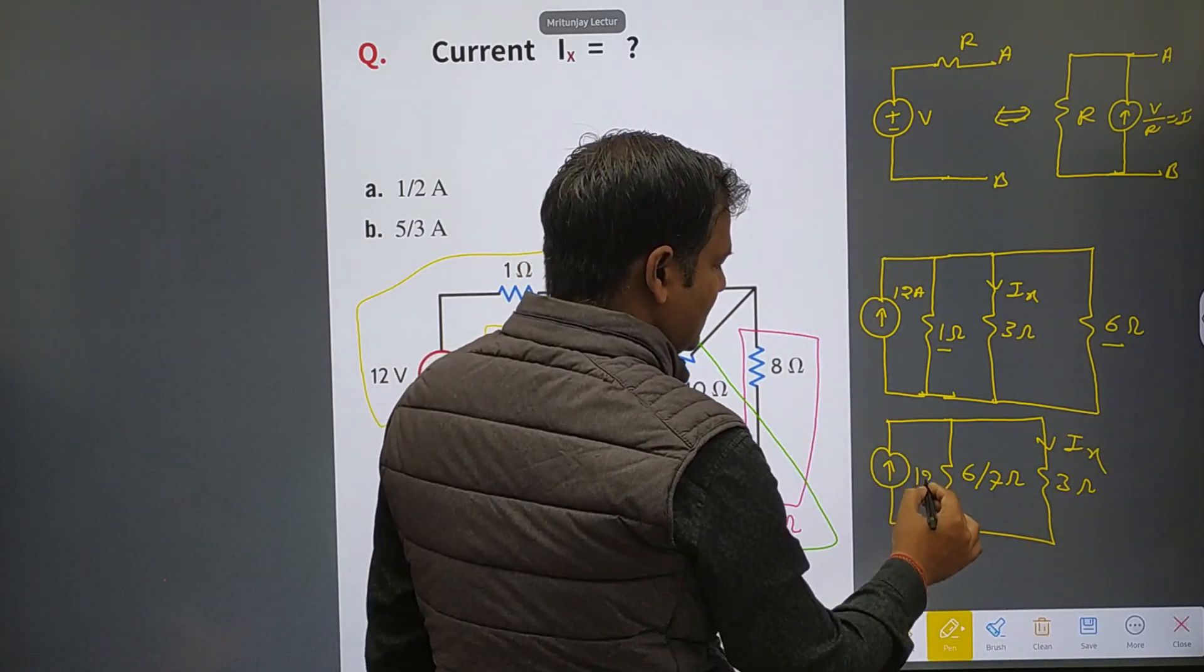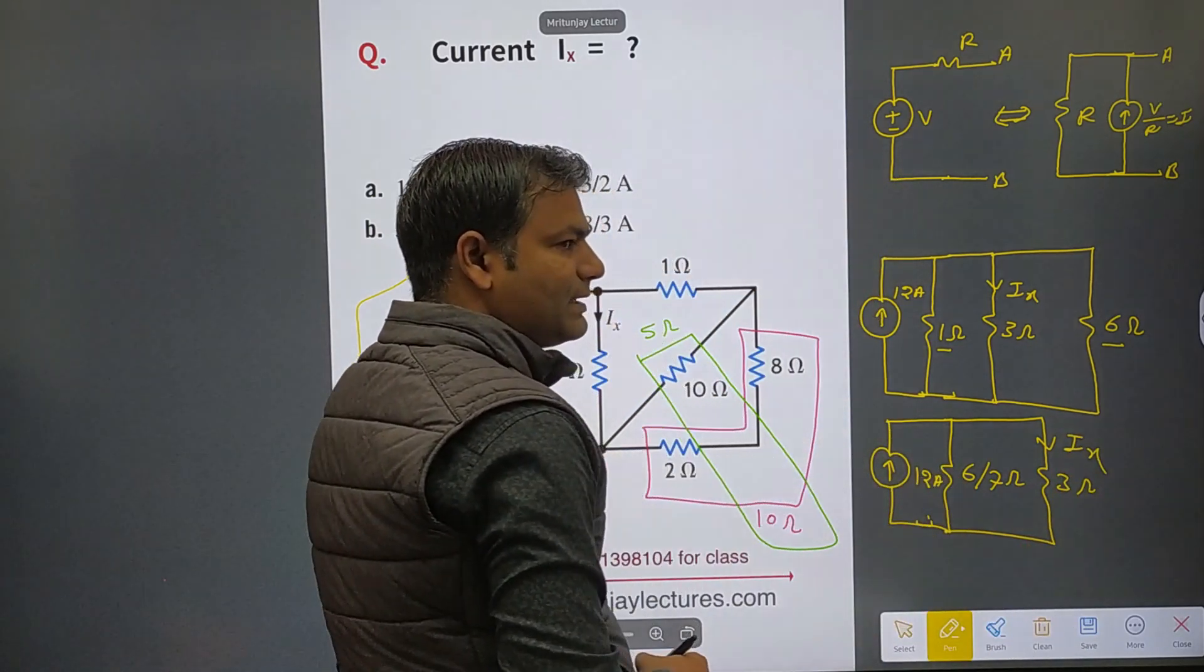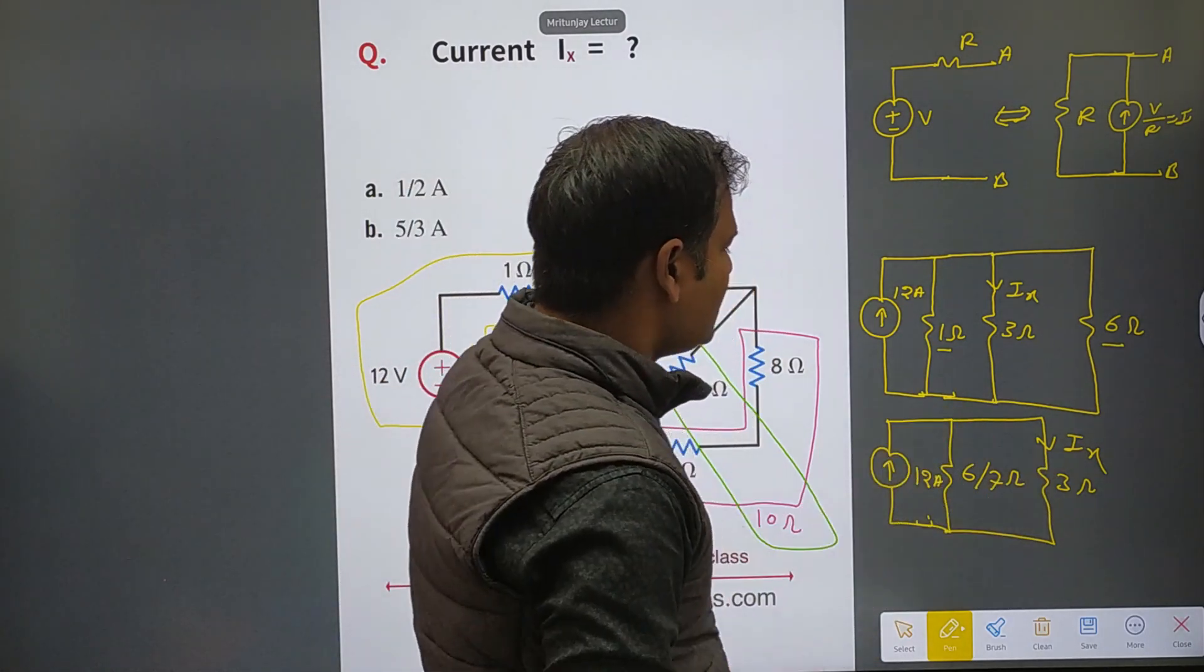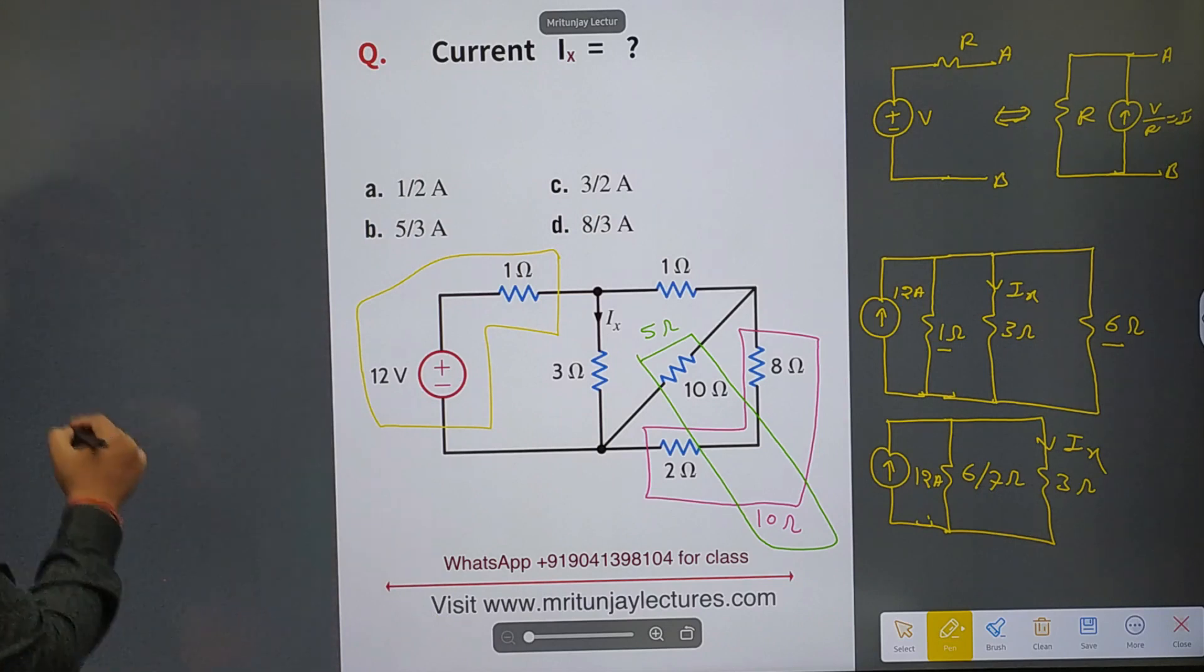That is 12 ampere. Apply current division rule here. So what about ix? ix is written as...